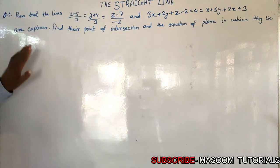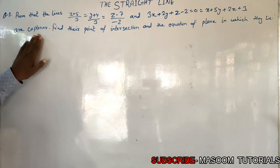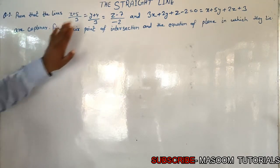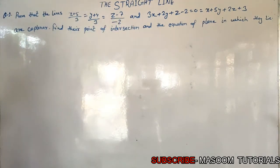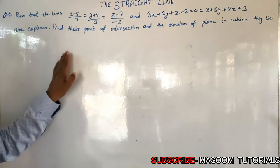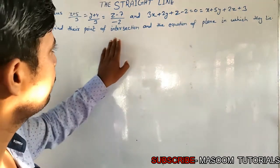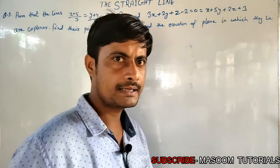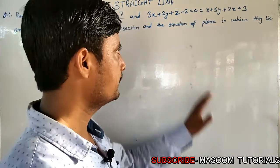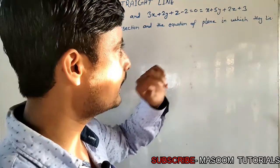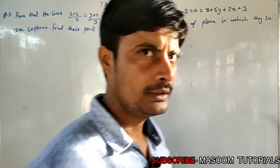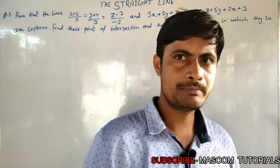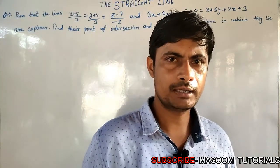We are going to prove that these two lines are coplanar, find the point of intersection of these two lines, and also find out which plane is constituted.